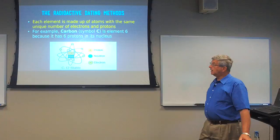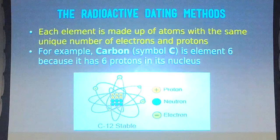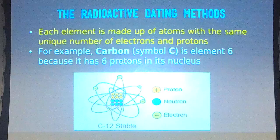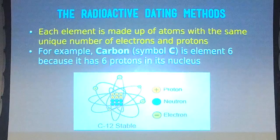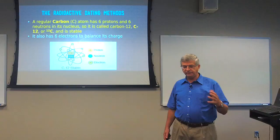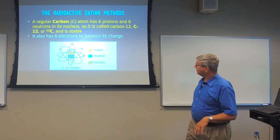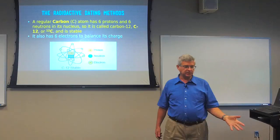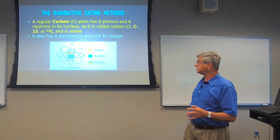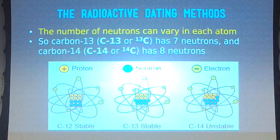Each element is made up of atoms with the same unique number of electrons and protons. The number of protons gives the element its chemical name. For example, element six is carbon — it has six protons in the nucleus and, to balance, six electrons orbiting in its shells. Normally it would have the same number of neutrons in the nucleus, so a regular carbon atom is called carbon-12 because it has six neutrons and six protons. The number of neutrons can vary, giving you different isotopes.